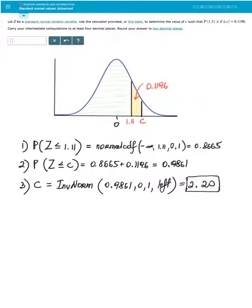That is equal to 0.1196. Carry your intermediate computations to at least four decimal places. Round your answer to two decimal places.